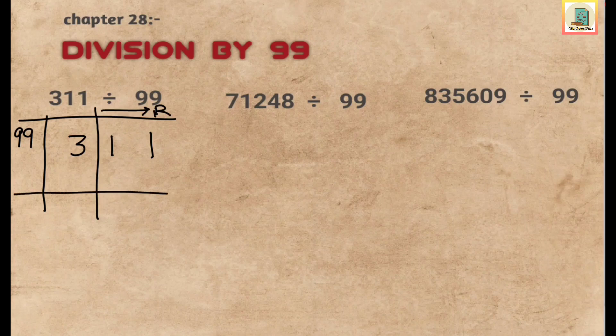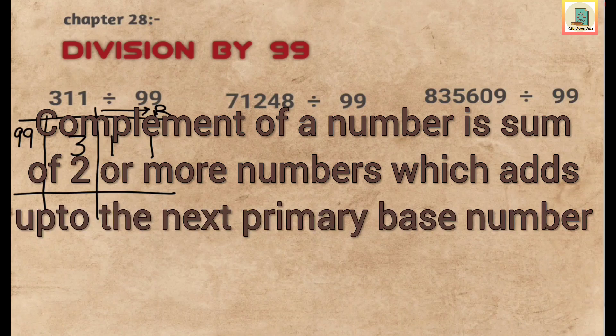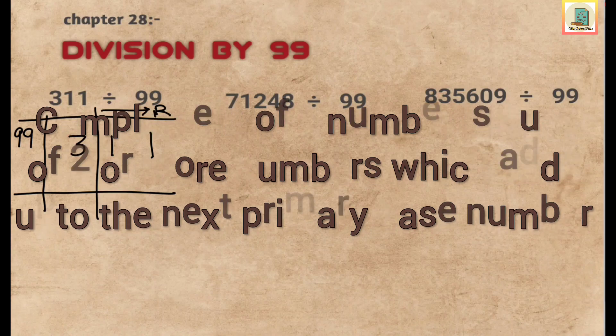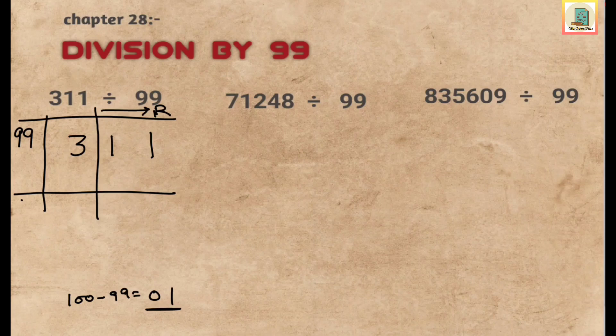This part will be the remainder part of the answer. Now we will take the complement of 99. What is the complement? Complement is sum of two or more numbers that adds up to the next primary base. Here the next primary base is 100. So 100 minus 99 we get 01 as the complement. We will consider two digit complement only: 0 and 1.